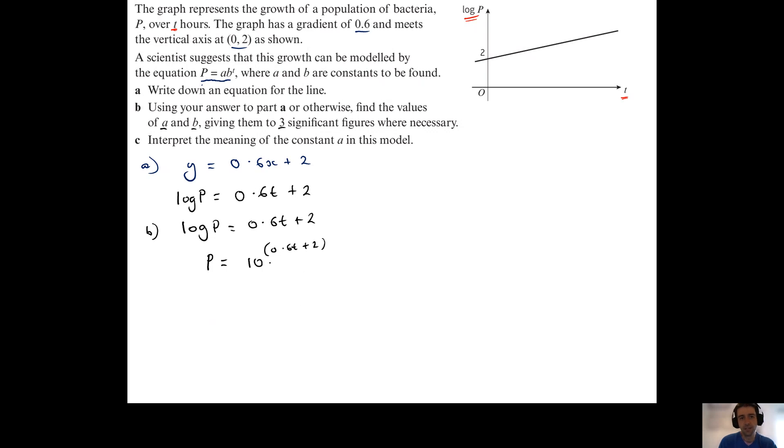What I'm now going to do is rearrange this right hand side so that it looks like a b to the power of t. The way I'm going to do that is to think, what calculation would I be doing with indices if I end up adding the two powers? And that would be multiplication.